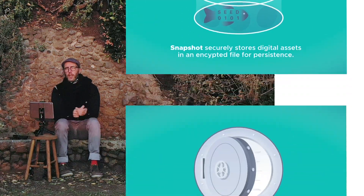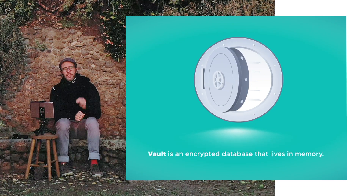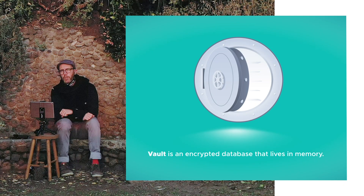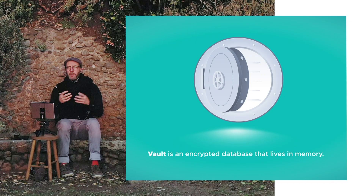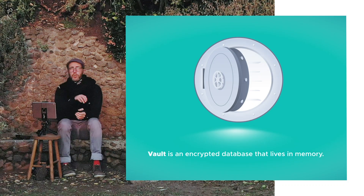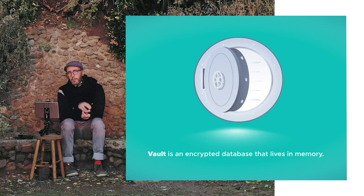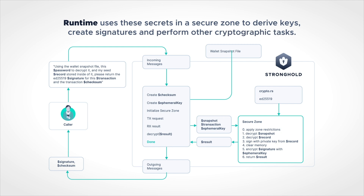Assuming you have one of these snapshots, the second thing that happens is that the snapshot gets imported into a vault. The vault is the memory storage — it's basically an encrypted database that lives in memory and allows you to write to records and delete records. That brings us to the third interesting part about Stronghold: it allows you to use these secrets without revealing them to the rest of the operating system or application, in the thing we call the runtime.